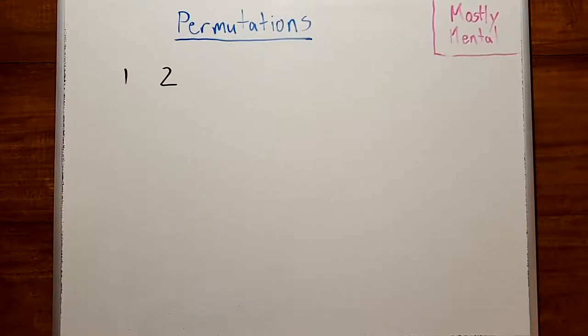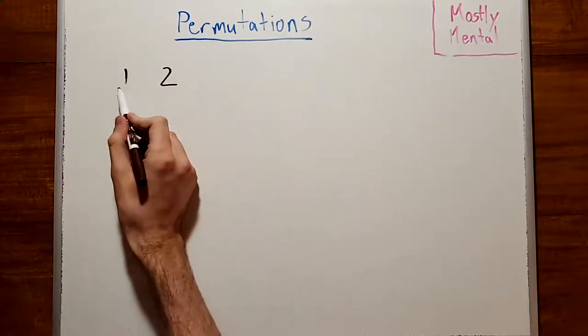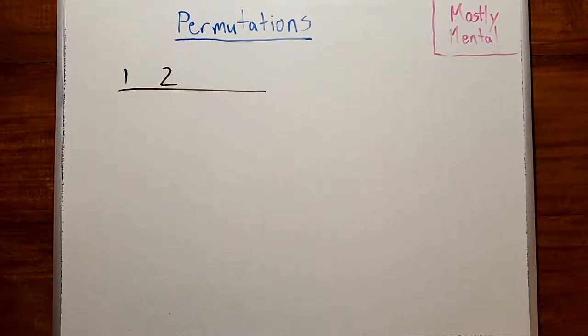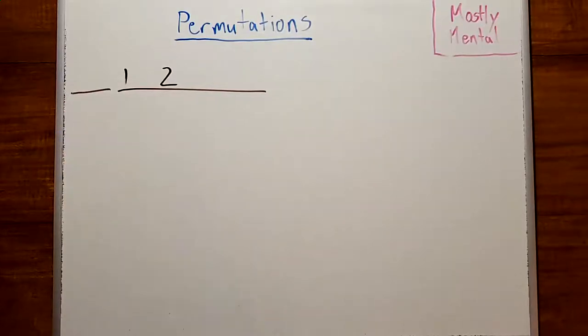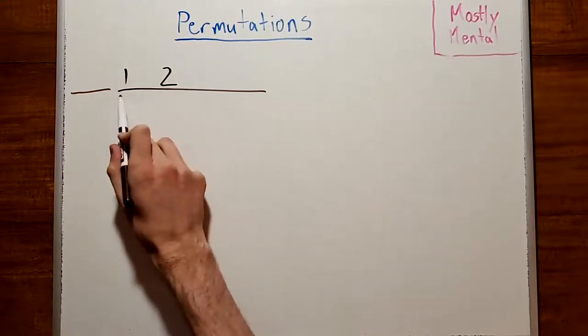In our canonical order, the numbers in the same cycle as 1 are the ones that come after 1. And anything that comes before is going to be in a different cycle. So our question becomes, how likely is it that 2 comes after 1?